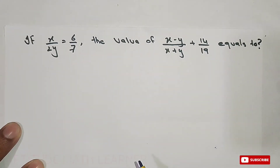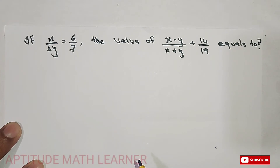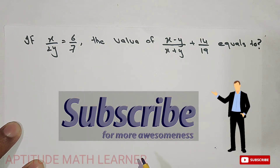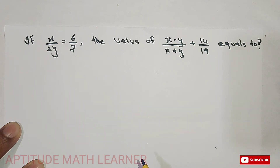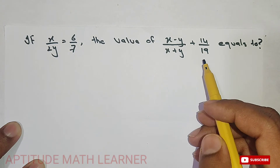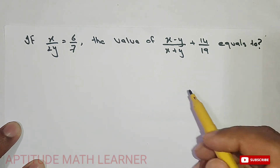Welcome to our YouTube channel Aptitude Math Learner. Today we are having a question — it is a very easy question. The question is: if x upon 2y is equal to 6 upon 7, find the value of x minus y upon x plus y plus 14 upon 19.